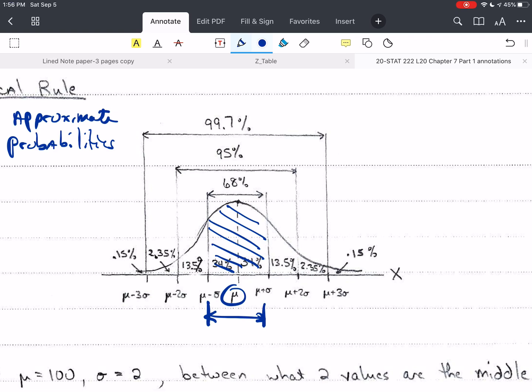Well, for one standard deviation on each side, 68%. For two standard deviations on each side, 95%. Three standard deviations on each side, 99.7%. Again, they're approximate. Now, let's look at the symmetry here.